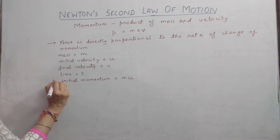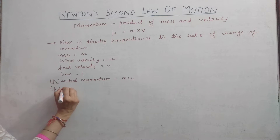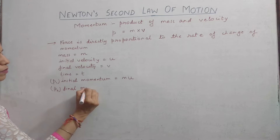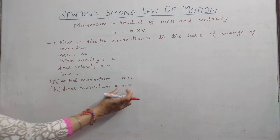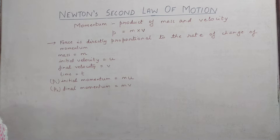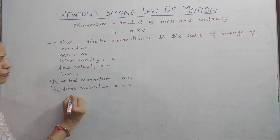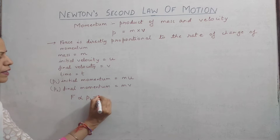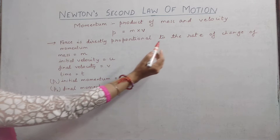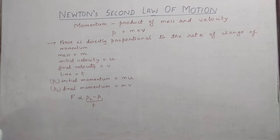Similarly, the final momentum P2 will be mass into final velocity, that is MV. Now, according to the definition, force is directly proportional to the change in momentum upon time — that is, final momentum minus initial momentum divided by time. Whenever we say rate of change, we divide by time, because rate of change means the change taking place in a unit time.